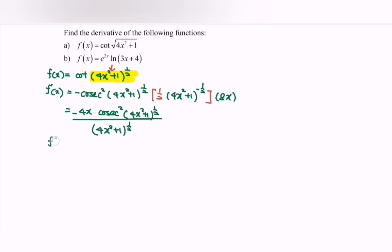Finally, f'(x) is equal to negative 4x cosecant squared square root of 4x² plus 1 over square root of 4x² plus 1.